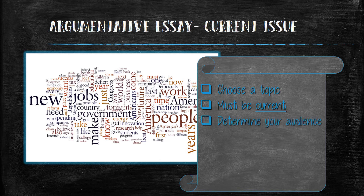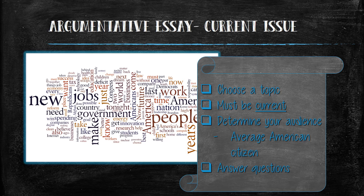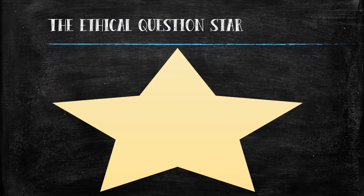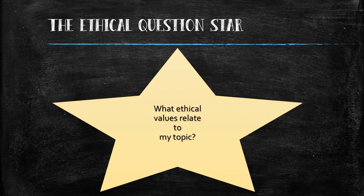After you've decided on a topic, you'll want to determine your audience. Assume that your audience has only a basic understanding of your topic, one of the average American citizen. Next, you'll answer a set of questions presented by scholar Teresa Henning to get you thinking about how ethics work in our world. Using the principles that you come up with from these questions, you'll then complete what Henning refers to as the ethical question star to help you relate ethics to your particular topic. Here's an example of the structure of the ethical question star — start with your topic in the center of the star.